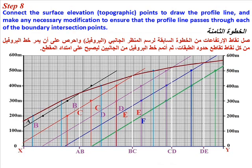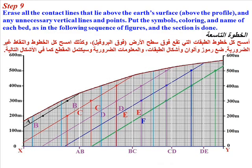Step 8. Connect the surface elevation points to draw the profile line and make any necessary modifications to ensure that the profile line passes through each of the boundary intersection points. Erase all the contact lines that lie above the earth's surface and any unnecessary vertical lines and points. Put the symbols, coloring, and name of each bed, as in the following set of figures. The section is done.